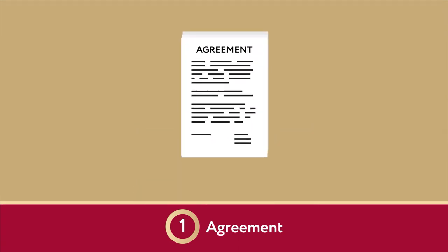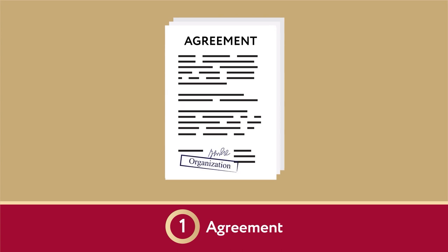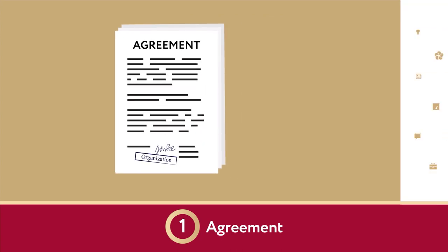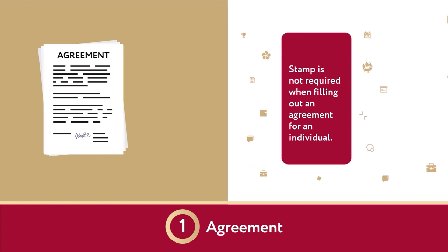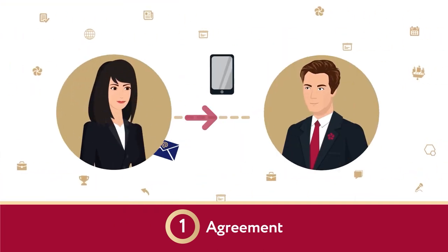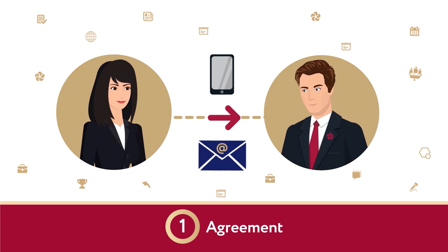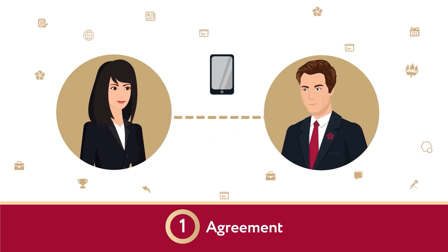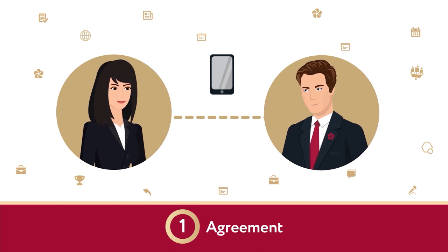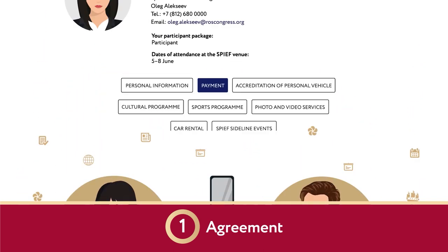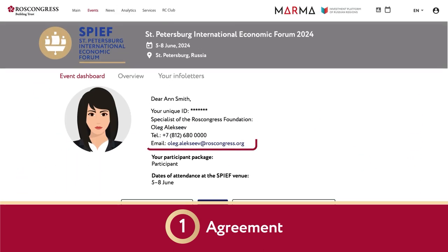You must sign and stamp all the necessary pages. When filling out the agreement for a private individual, you do not need to put a stamp. When drafting the agreement, we request that you contact the specialist of the Ross Congress Foundation, whose name and contact details can be found in the Forum tab of your Ross Congress personal account.